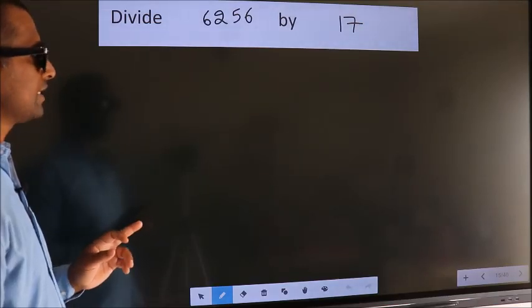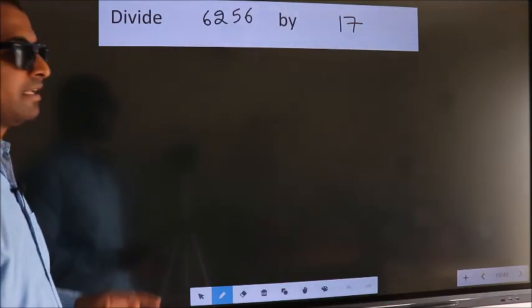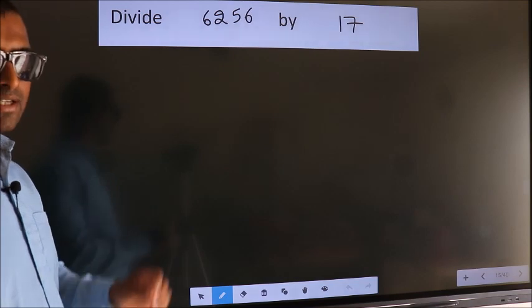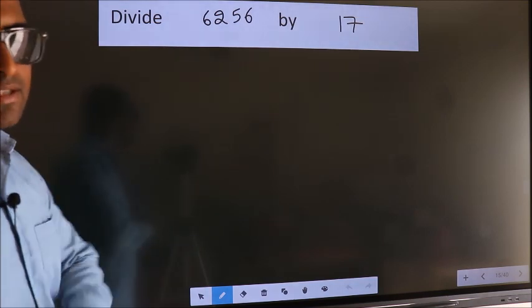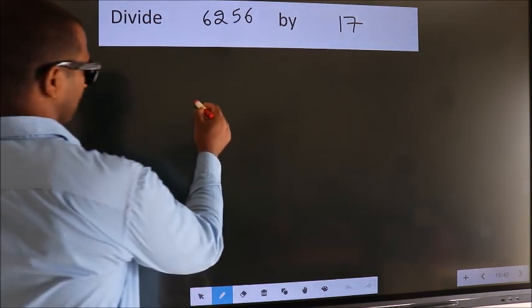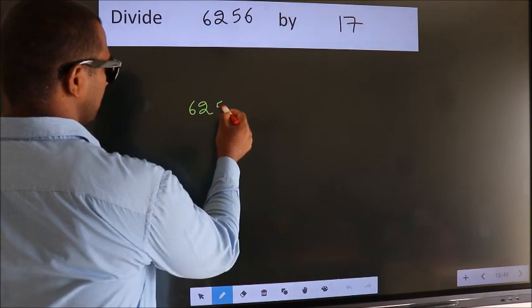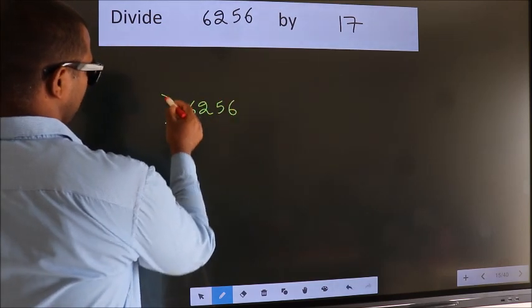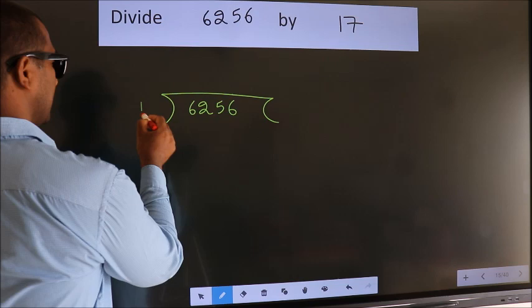Divide 6256 by 17. To do this division, we should frame it in this way. 6256 here, 17 here.